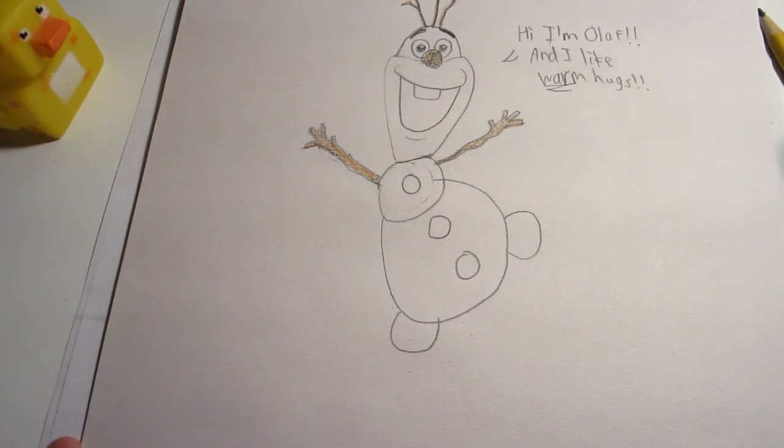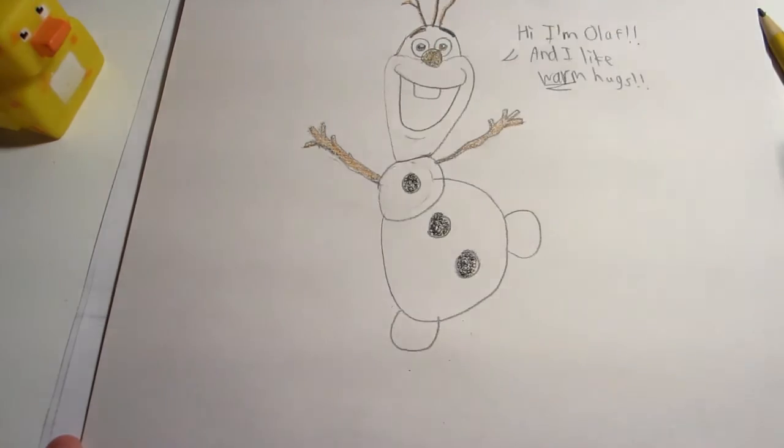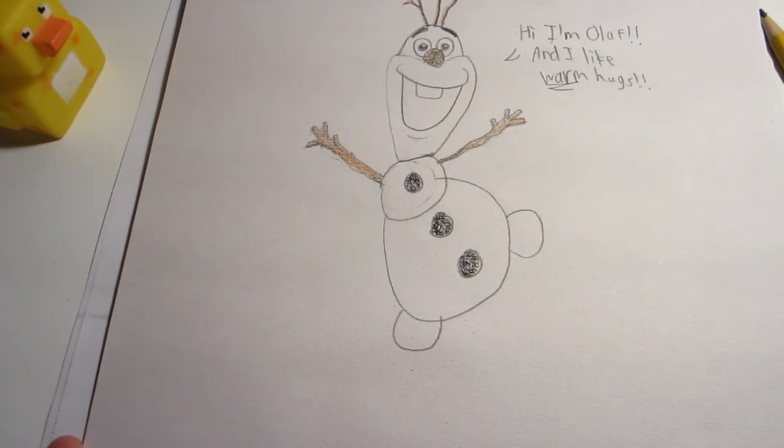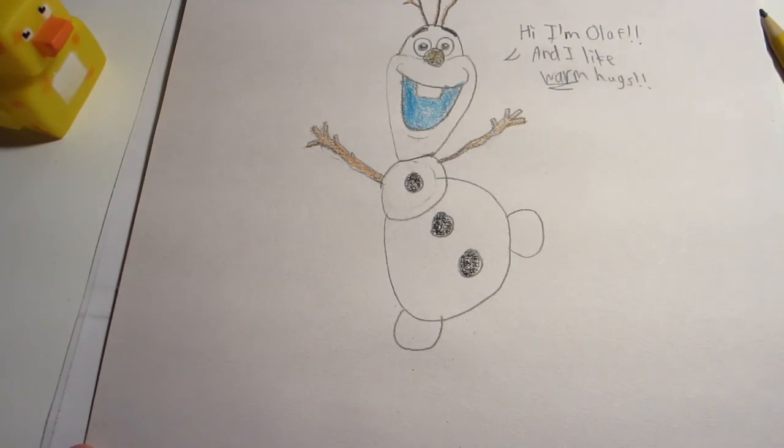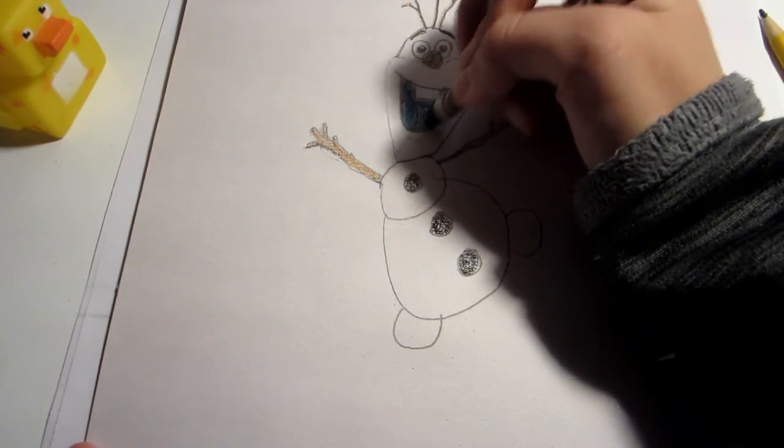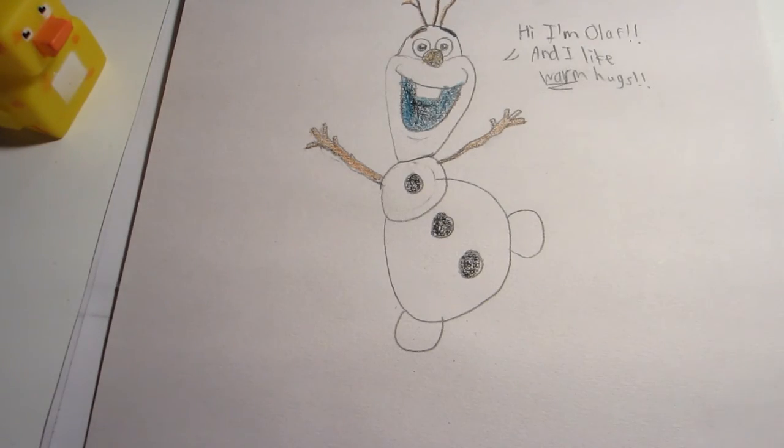And then I'm going to color the coal on his body—I'm guessing it's coal. The mouth is going to be kind of like a dark teal. I didn't really have a dark teal, so I just kind of colored teal darkly, hard, and then add black on top of it to make his mouth.